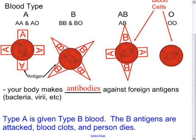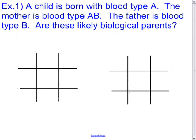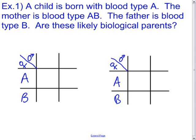Now, how does this relate to Punnett squares and genetics? Consider the following case: a child is born with blood type A, the mother is blood type AB, and the father is blood type B. Are these likely biological parents? Use the Punnett squares to determine this for yourself, then unpause to discover the answer.